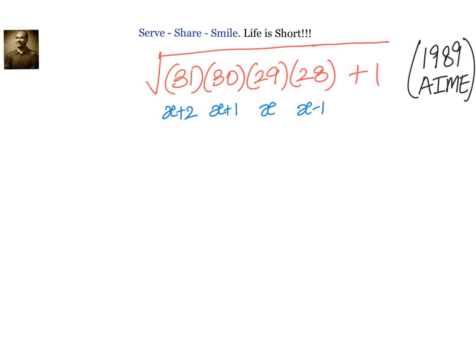Our logic is to make this algebraic expression a perfect square so that the square root cancels out. We get the answer in terms of x, then substitute x equals 29 in the final step.